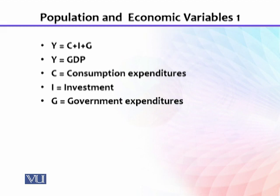You might be thinking: these are all expenditures, so why do we call it GDP or national income? Actually, within a country, if one person spends something, that becomes the income of another person. So when expenditure in your country increases, it means those people whose goods and services are being used will see their demand increase.